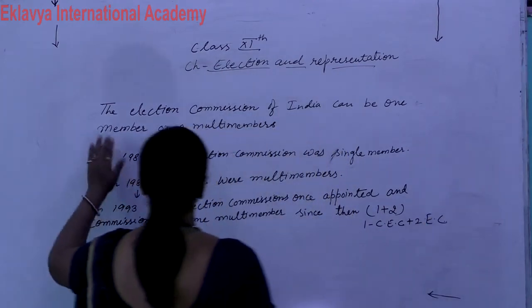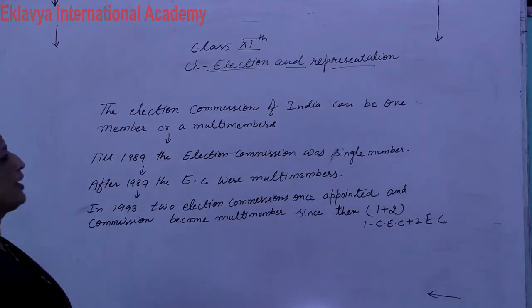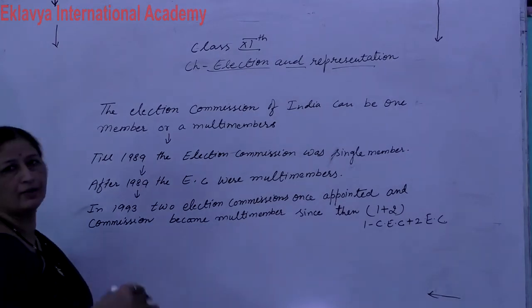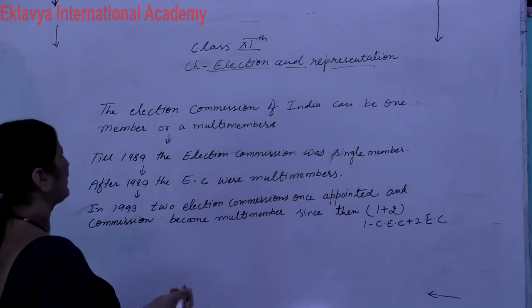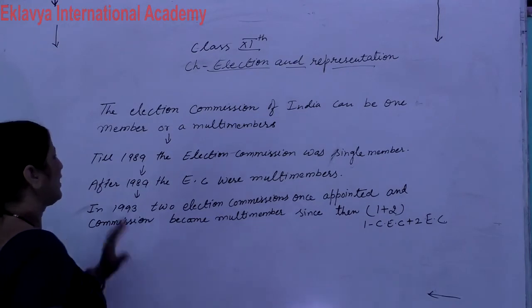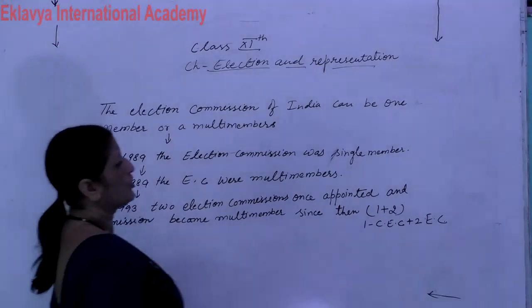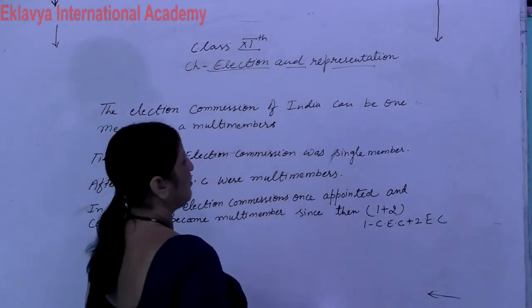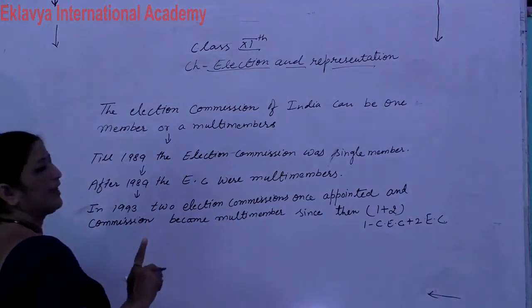So we have seen that the Election Commission of India can be single-member or multi-member. Till 1989, the election commission was single-member. After 1989, it became multi-member.